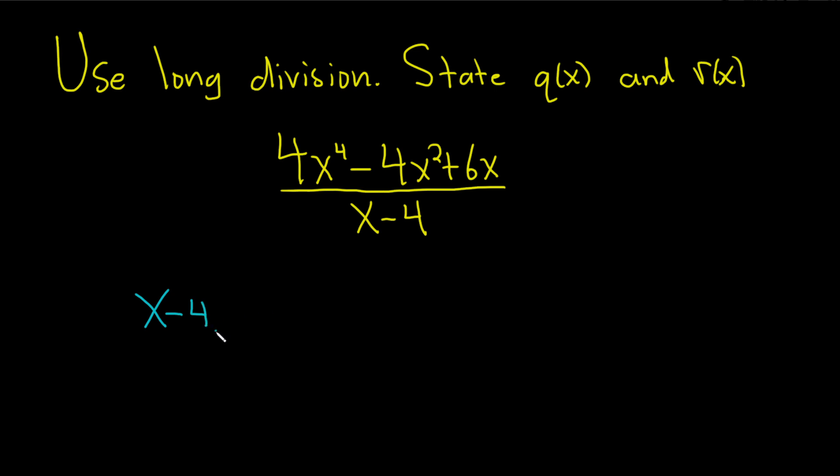Now I'm going to put the funny division symbol like this, make it really big just in case. And then we have 4x to the fourth, so that will go here. Now you'll notice that we're missing an x cubed. So what I like to do is use placeholders. I'm going to put a plus 0x cubed just to fill it in, and then minus 4x squared plus 6x. And we're missing a constant term, so I'm just going to add the number 0 to fill it in. I like placeholders. You don't have to use placeholders, but the way I do it is with placeholders. I think it's just easier.